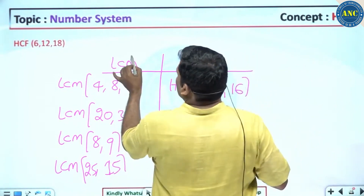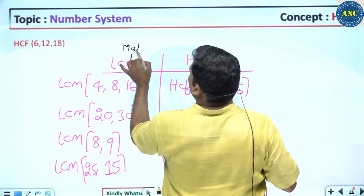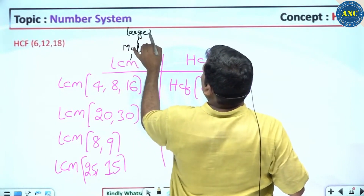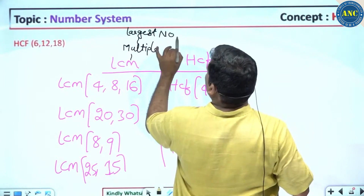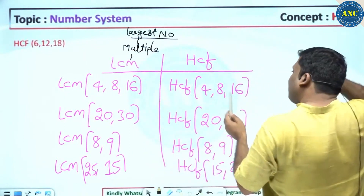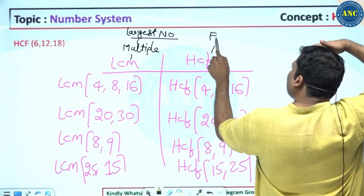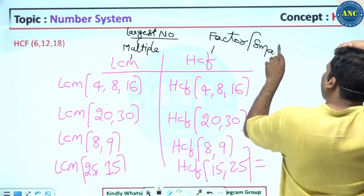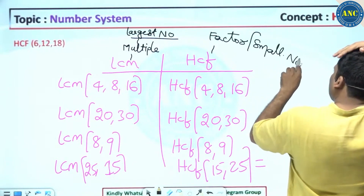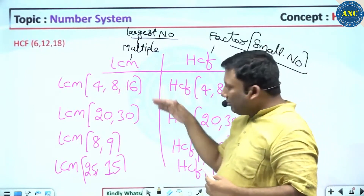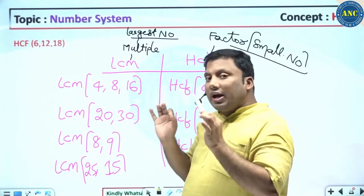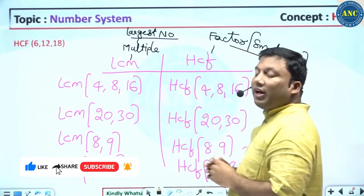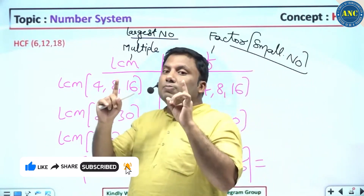LCM — M stands for multiple. Multiple means the largest number. HCF — F stands for factor, which means the smallest number. So for LCM, keep an eye on the largest value; for HCF, keep an eye on the smallest value.